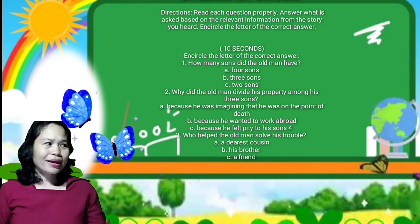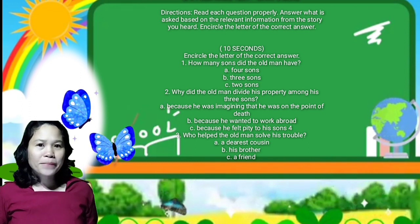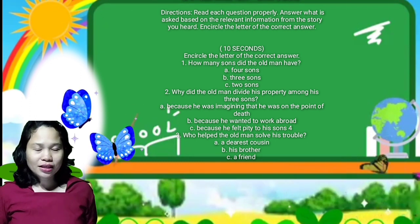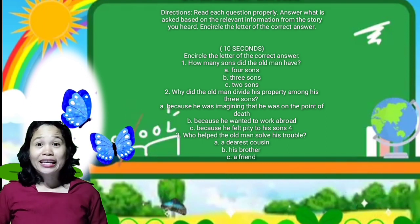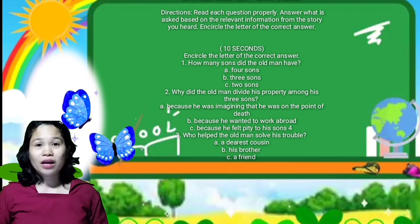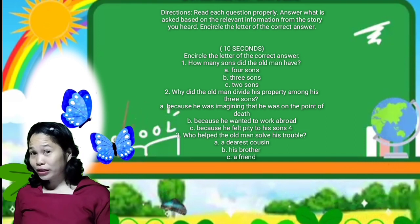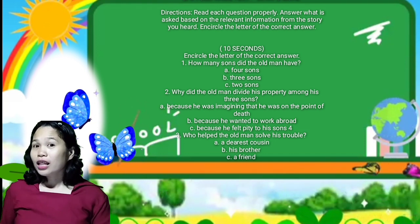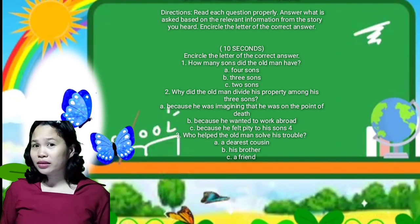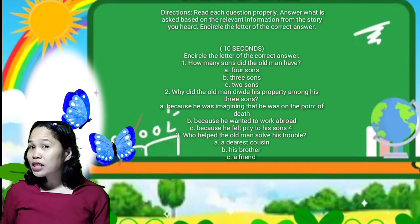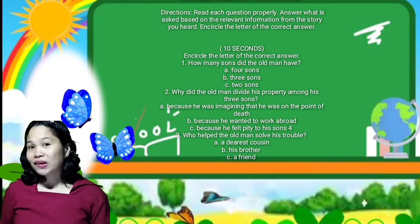Number one: how many sons did the old man have? A — four sons; B — three sons; C — two sons. Number two: why did the old man divide his property among his three sons? A — because he was imagining that he was on the point of death; B — because he wanted to work abroad; C — because he felt pity on his sons.